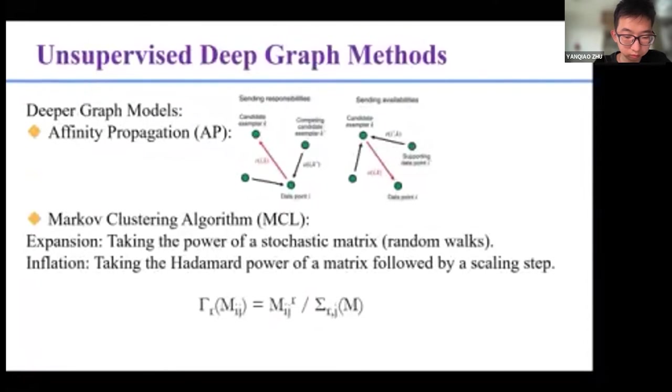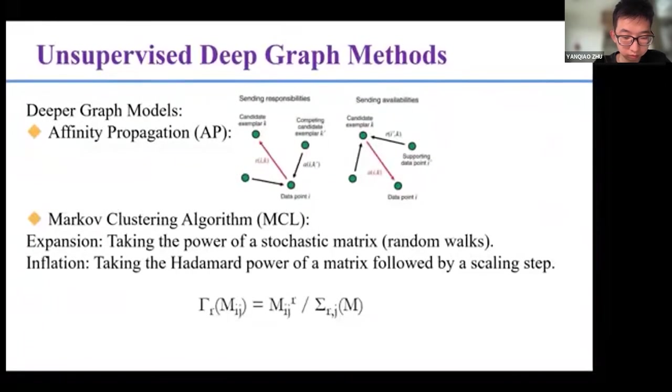The second one is the Markov clustering algorithm. It simulates random walks on a graph by an alternation of two operators called expansion and inflation. Expansion coincides with taking the power of a stochastic matrix using the normal matrix product. In fact, inflation corresponds with taking the Hadamard power of a matrix, followed by a scaling step, such that the resulting matrix is stochastic again. The inflation design enables MCL to have the ability of resharpening those transition probabilities, and it can also achieve thousands of times of message passing with clear clustering results.